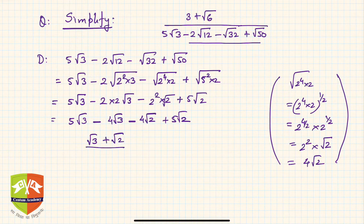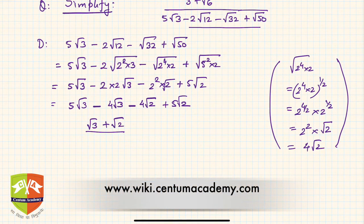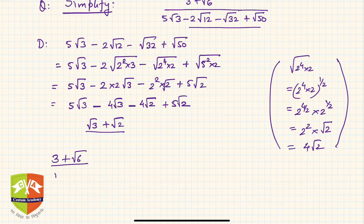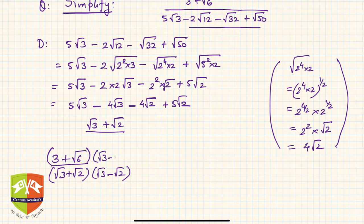The given expression is now reduced to (3 + √6) divided by (√3 + √2). Now we need to rationalize the denominator to simplify further. Rationalization means multiplication by the conjugate, which is √3 minus √2.